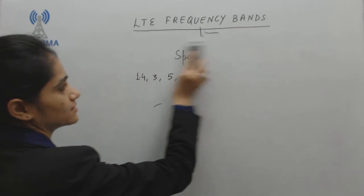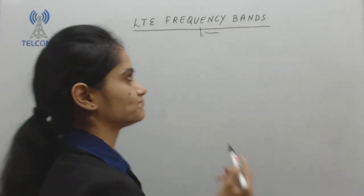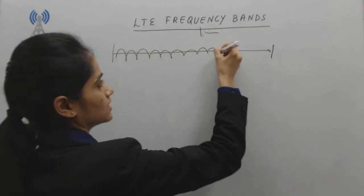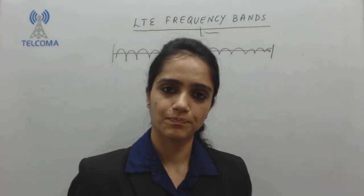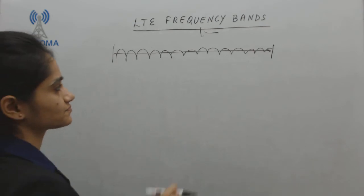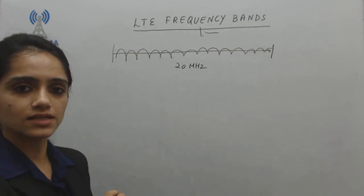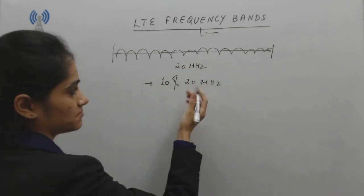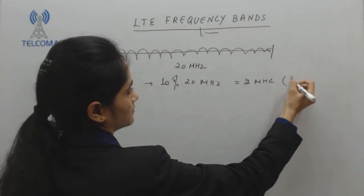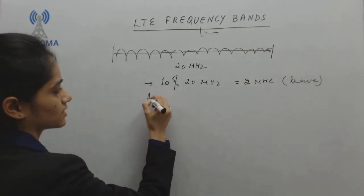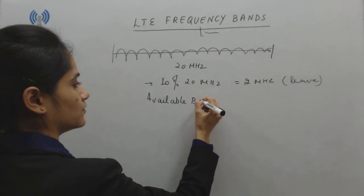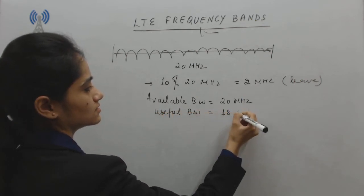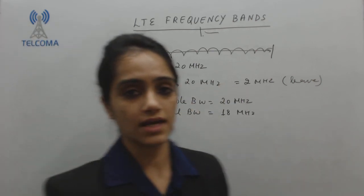Now the concept of subcarriers — how subcarriers are calculated. This is my 20 megahertz bandwidth, and I have a number of subcarriers within it to carry my data as well as signaling. To calculate the number of subcarriers, we take the maximum which is 20 megahertz. As per the rule, I have to leave 10 percent of whatever bandwidth is given. So 10 percent of 20 megahertz is 2 megahertz, which I have to leave. That means total available bandwidth is 20 megahertz but useful bandwidth is 18 megahertz, as per 3GPP specifications.